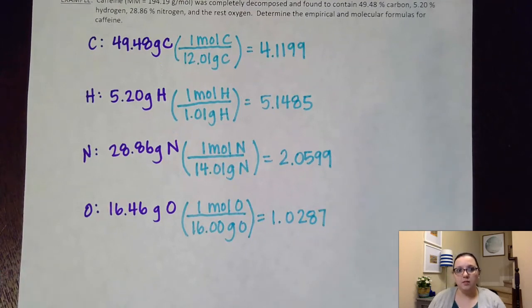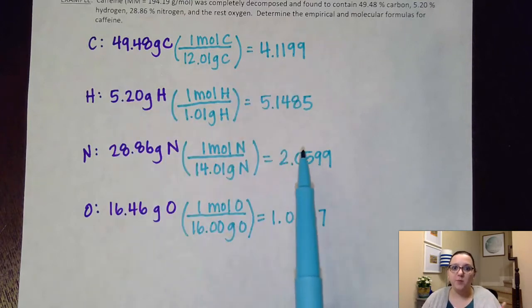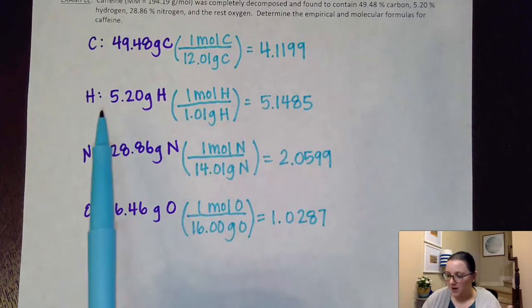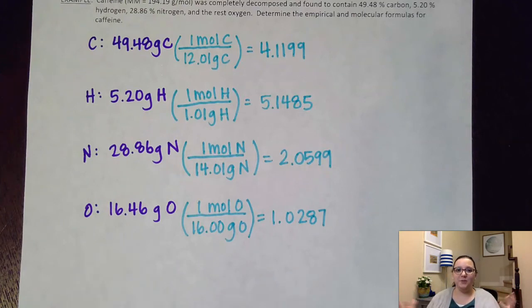So what I have here are the moles of each of these in ratio, which means I have an atom ratio as well. For every 4.1199 atoms of carbon, there are 5.1485 atoms of hydrogen. There are 2.0599 atoms in nitrogen and 1.0287 atoms of oxygen in my compound. Yay! I know an atom ratio. Here's the problem, though. I can't put these fractional numbers as subscripts. That does not work.